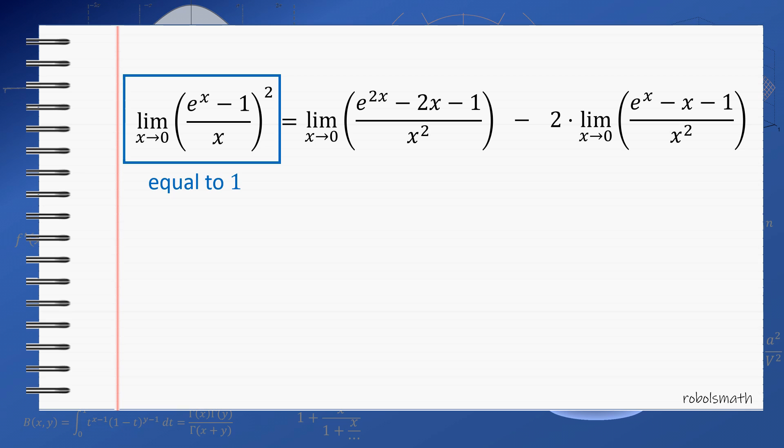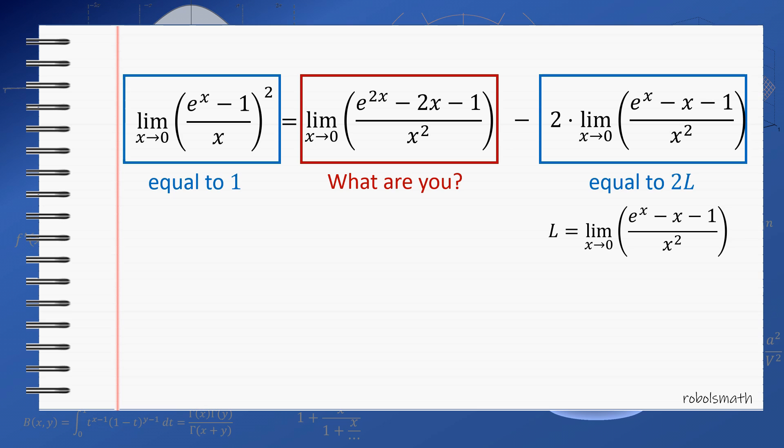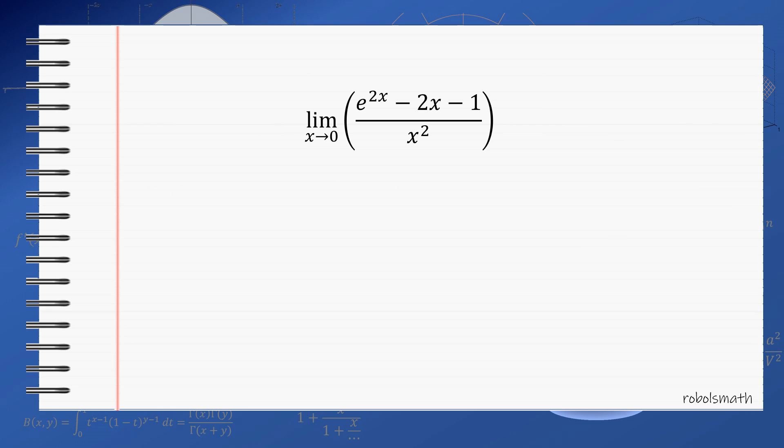The first one is equal to 1 squared or 1. The last one is equal to 2L where L is the original limit, the limit we want. So the next goal is then to evaluate the second expression or at least express it in terms of L. Notice that this expression is quite similar to the limit we want in that it has e to the something minus something times x minus 1 over x squared and just by making appropriate substitution which is specifically u equals 2x then it becomes more and more similar to what we want.